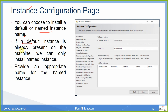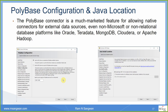If a default instance is already present on your machine, you can only install a named instance. I am going to show you the named installation also — once my current installation is complete I will demonstrate one more instance. Provide an appropriate name for the named instance. If you are using named, the default will not be available after one instance is already present. PolyBase connector is a much-marketed feature for allowing native connectors to external data sources, even non-Microsoft or non-relational databases.